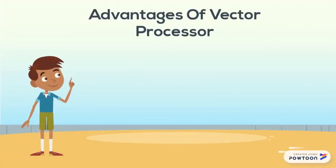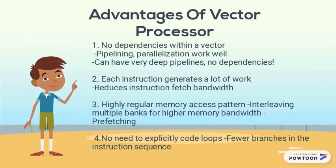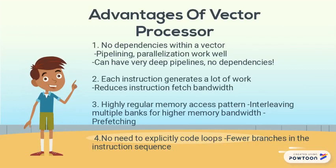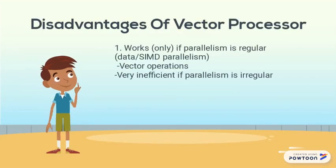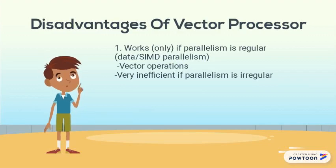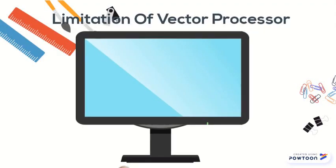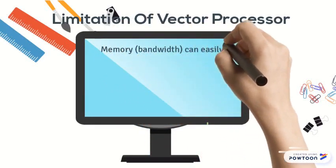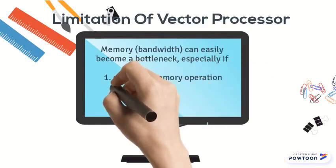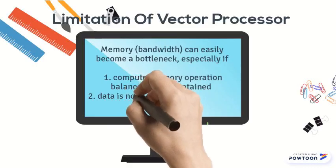The advantages of vector processors are: no dependencies within a vector, each instruction generates a lot of work, highly regular memory access patterns, and no need to explicitly code loops. The downside is it works only if parallelism is regular; vector operation is very inefficient if parallelism is irregular. A limitation of vector processors is that memory bandwidth can easily become a bottleneck, especially if the compute-to-memory operation balance is not maintained, or if data is not mapped appropriately to memory banks.